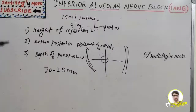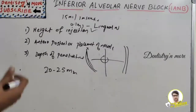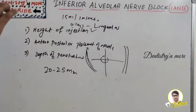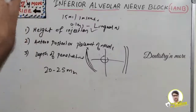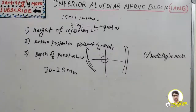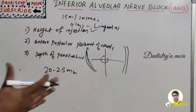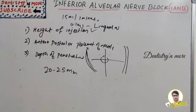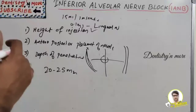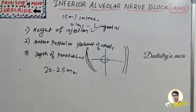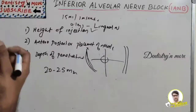One important precaution: do not deposit local anesthetic if bone has not been contacted, because the needle tip might be resting on the parotid gland — accidentally depositing solution there can cause temporary facial nerve paralysis. Also avoid pain by not contacting bone too forcefully, even though obtaining bone resistance is the ultimate aim.